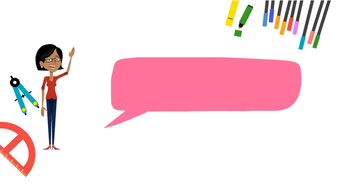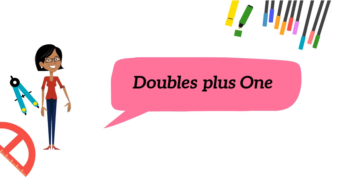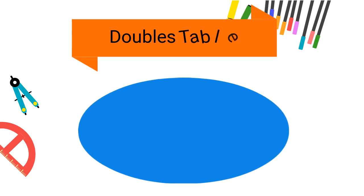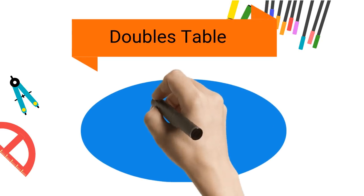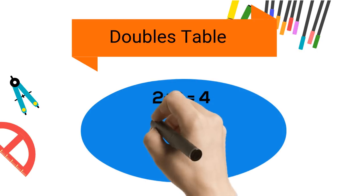Hi friends, today we are going to learn a kindergarten math strategy that is doubles plus one concept. For this, kids need to know the doubles table. If you don't know what that is, you can check my doubles video.